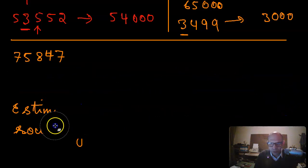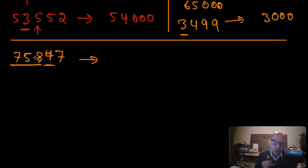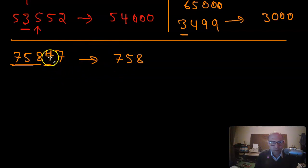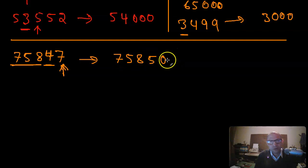To approximate 75,847 to the nearest tens, all digits to the left of the tens place remain the same — 7, 5, 8 stay unchanged. The tens digit is 4; look at the next digit, which is 7, greater than 5, so round up. The 4 becomes 5 and the ones digit becomes zero. So 75,847 approximated to the nearest tens becomes 75,850.